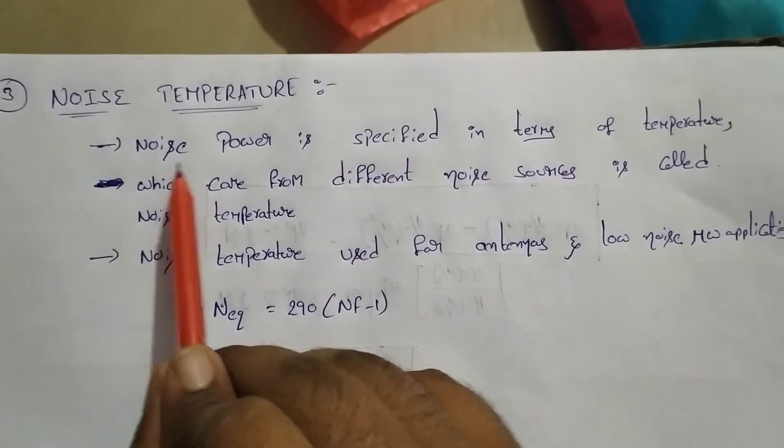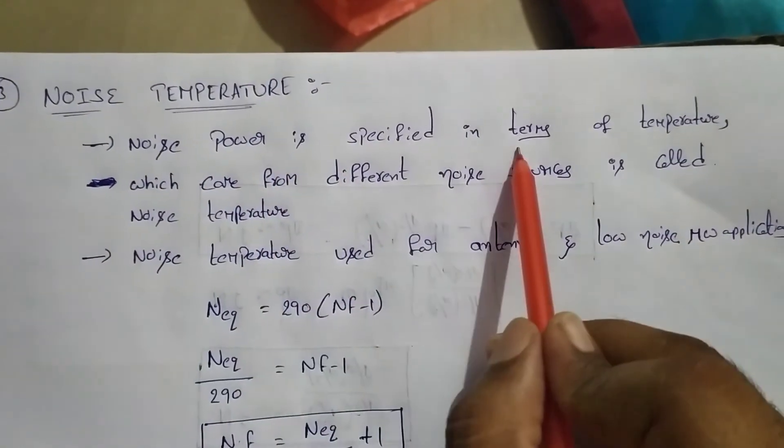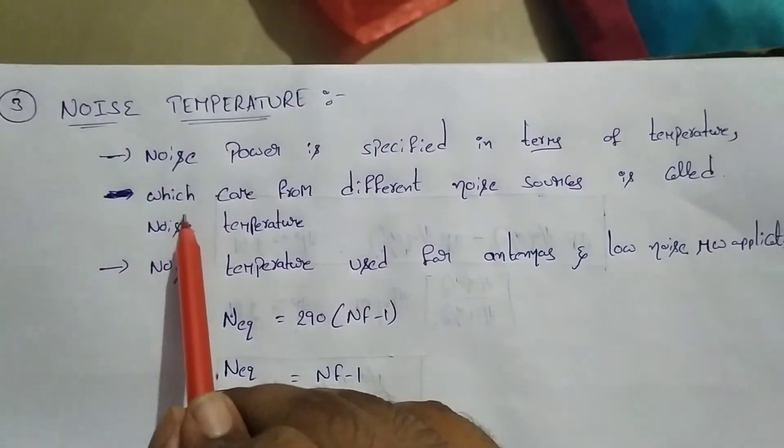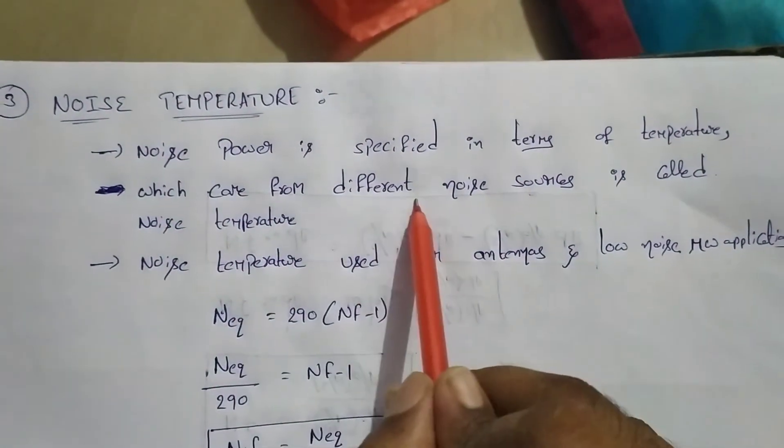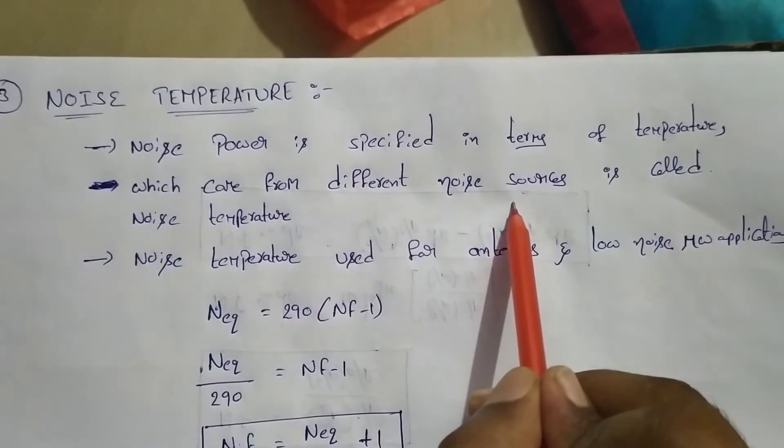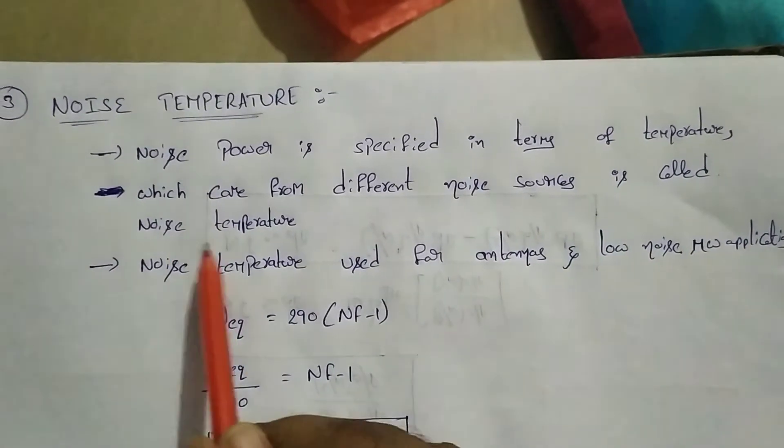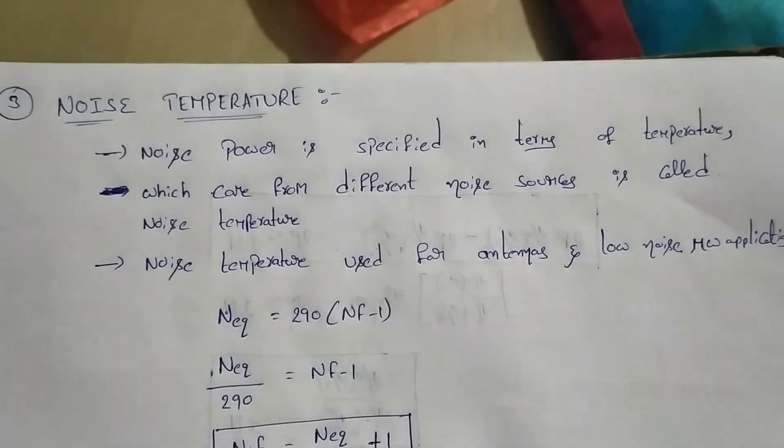We know that noise power is specified as temperature, which came from different noise sources, and this is called noise temperature.